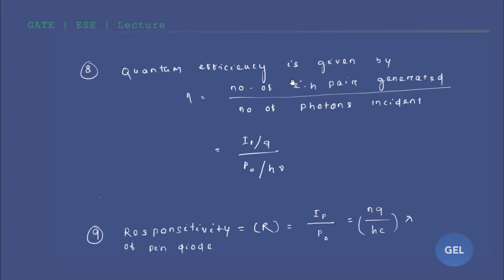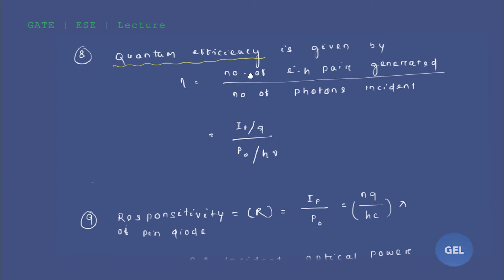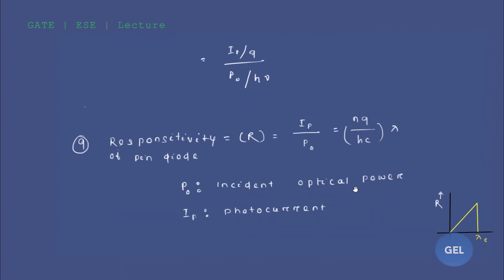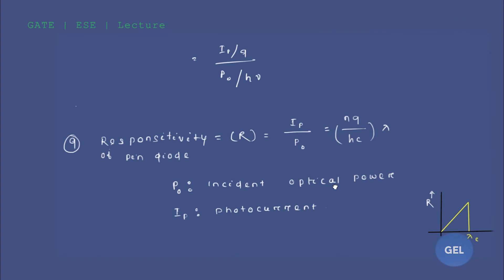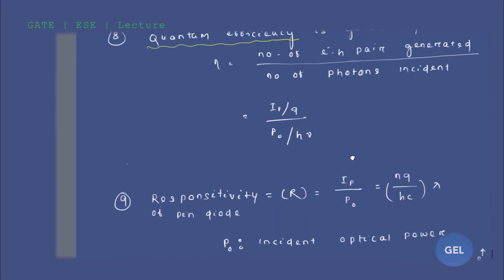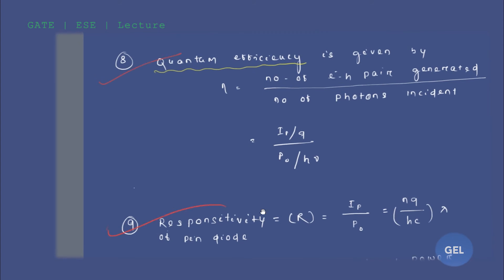Quantum efficiency, denoted eta, is the number of electron-hole pairs generated divided by the number of photons incident — how many of the incident photons actually generated electron-hole pairs. The numerator is ip/q and the denominator is p-naught/h-nu, where p-naught is the incident optical power and ip is your photo current. Responsivity of the PIN diode is R = ip / p-naught, and there is also a formula: R = (eta × q) / (h × c) × lambda.